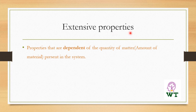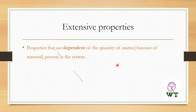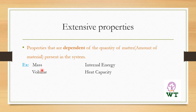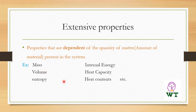The next thermodynamic property is extensive properties. The properties which are dependent on the quantity of matter or amount of substance present in the system are called extensive properties. For example, mass, internal energy, volume, heat capacity, entropy, heat content, etc. are examples of extensive properties.